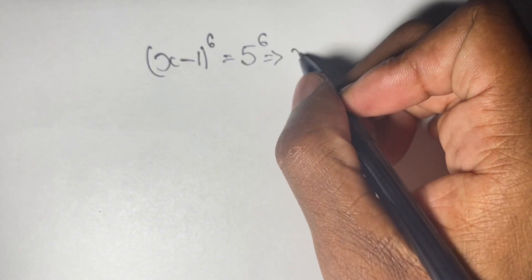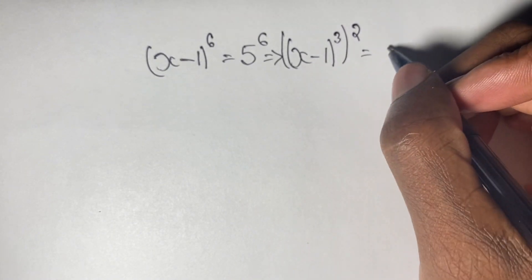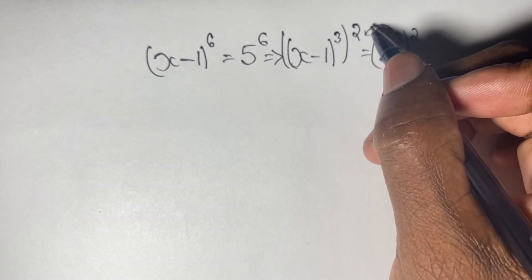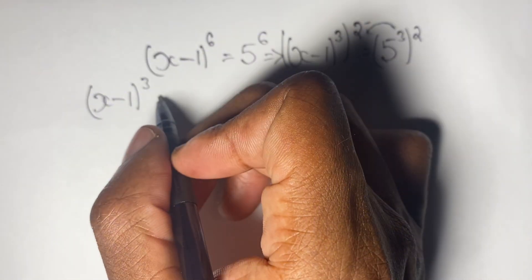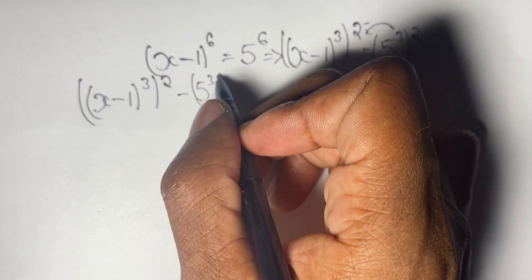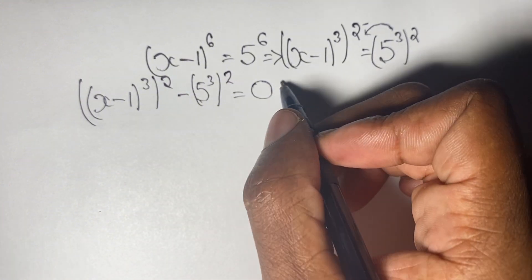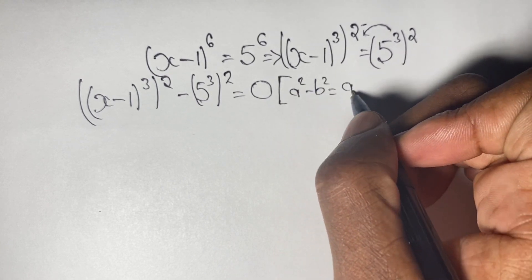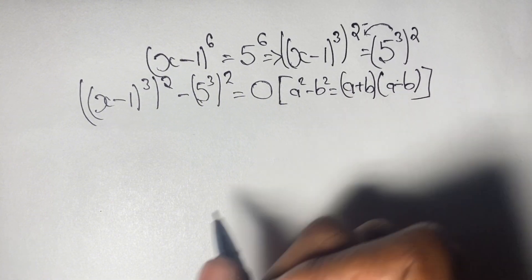We can rewrite this equation as x minus 1 to the power of 3, bracketed to the power of 2, is equal to 5 to the power of 3, bracket squared. Then we can bring that over to the left-hand side of the equation, where we will now have (x minus 1)^3 squared minus (5^3) squared is equal to 0. Now we have two squared terms, which gives us the idea of the difference of two squares, where a squared minus b squared equals (a + b)(a - b).